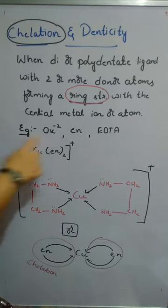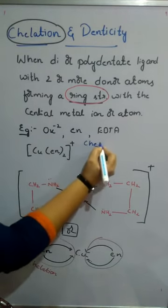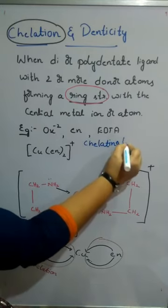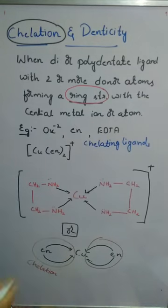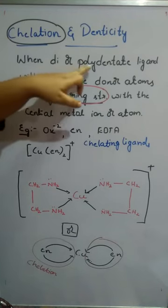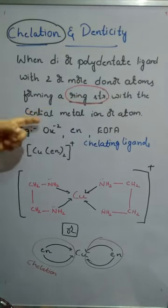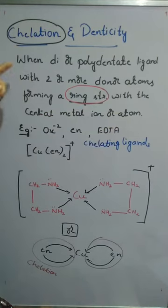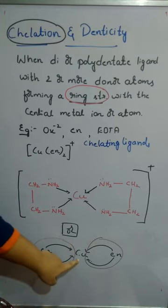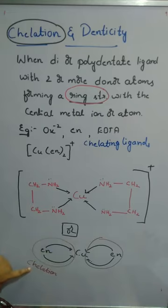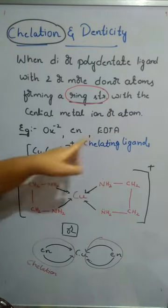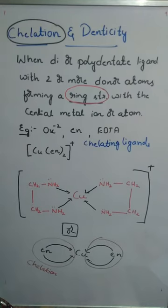These ring structures are nothing but chelation — the property of the ligand to form a ring structure around the central metal atom. The ligands that form such ring structures are called chelating ligands. Chelation is when bidentate or polydentate ligands with two or more donor atoms form a ring structure with the central metal ion.